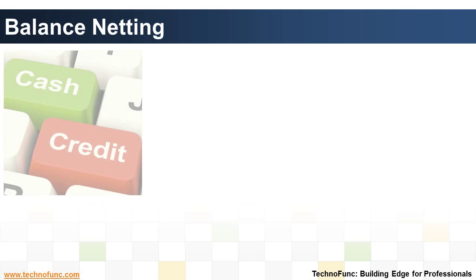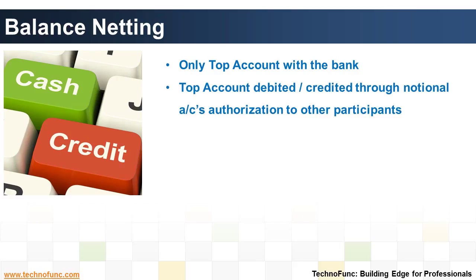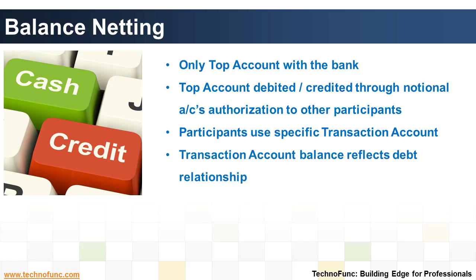Balance netting is another arrangement to achieve cash pooling in an organization. The key aspects of this structure are: only one company has an account; the top account is debited or credited through notional accounts; the top account holder grants authorizations to other group companies to use the top account through a specific transaction account; and the balance of the transaction account shows the debt relationship between the top account holder and the transaction account holder.